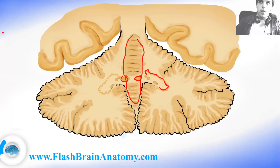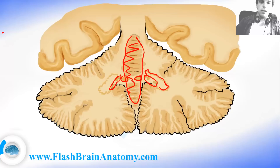So to summarize: the fastigial nucleus receives input from the vermis; the interposed nucleus — or the emboliform and globose nucleus — receives input from the paravermis zone; and the dentate nucleus receives input from the lateral parts of the cerebellum.